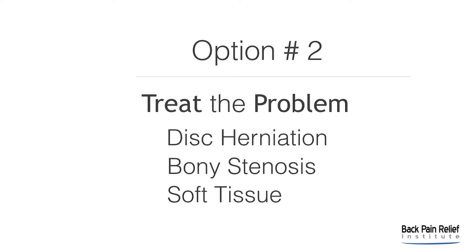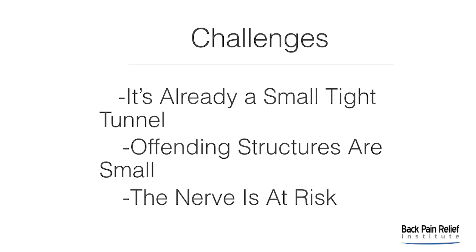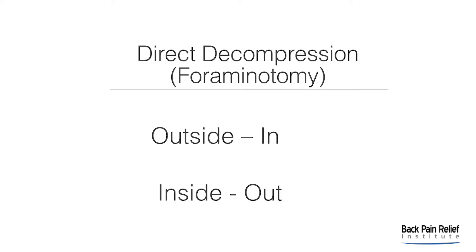Option two is to actually treat the problem. What is it that's causing the foraminal stenosis? Is it a disc herniation, bony stenosis from the superior articular process, or some soft tissue growth into the foraminal canal like a synovial cyst or overgrowth of the capsule of the facet joint? There are some challenges: it's already a tight, small canal, the offending structures are small, and the nerve is at risk — being compressed in the foraminal canal. Direct decompression, referred to as a foraminotomy, can be approached from the outside in or the inside out.